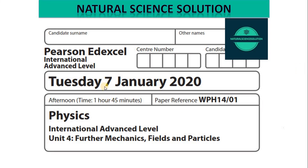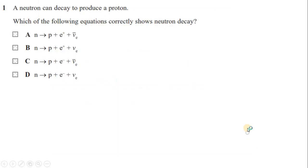Welcome to the video solution for this past paper. This is Edexcel IAL Physics Unit 4, January 2020. Question one: a neutron can decay to produce a proton. Which of the following equations correctly shows a neutron decay? This is all about particle physics — a neutron is decaying into a proton.